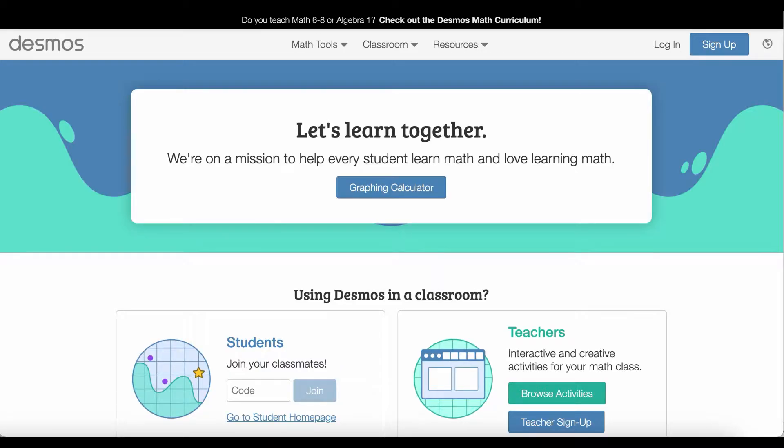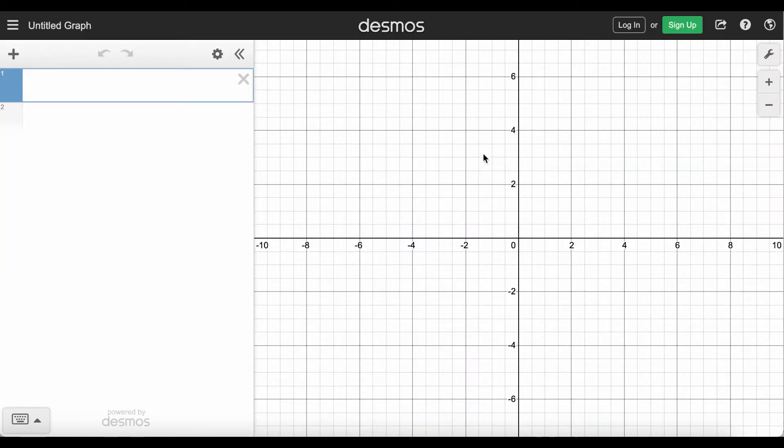This video demonstrates how to create an input-output table for a function using Desmos. At Desmos.com I click on graphing calculator. I'm going to ignore the graphing part over here.